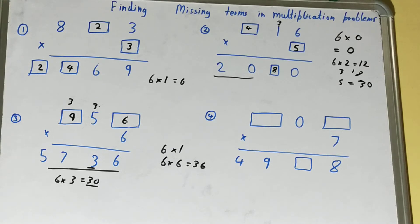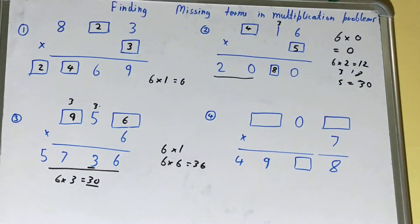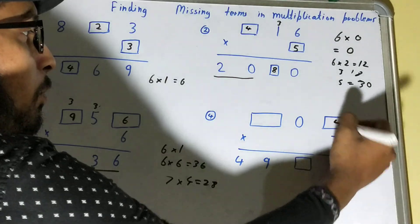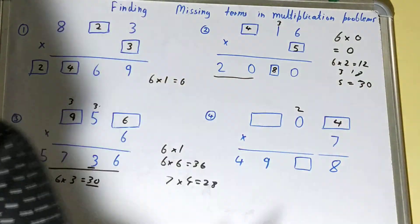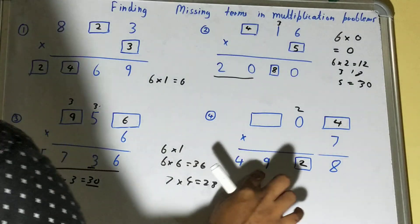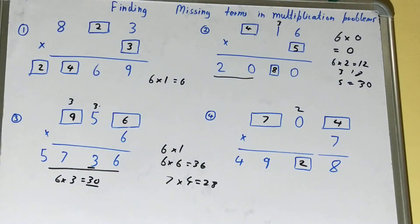For the last problem, we have two missing terms. We look at one column at a time. We need to multiply seven with something to get eight as the last digit — seven times four is 28, so we place four, and two carries to the next digit. Seven times zero plus two carry gives two. Next, we need seven times something to get 49 — seven times seven is 49. So the missing terms are four and seven.